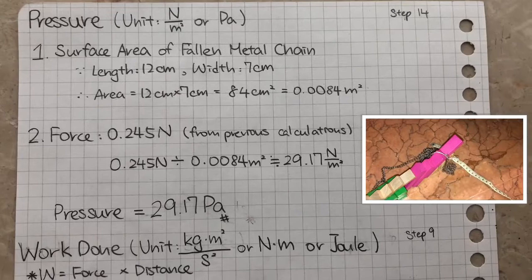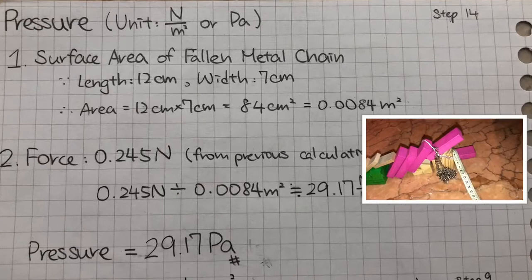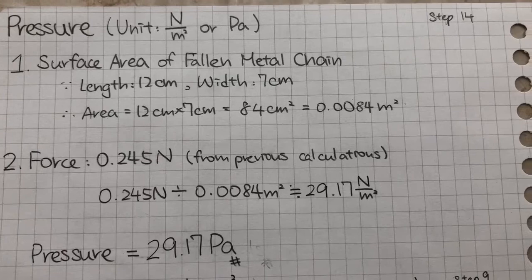I calculated the surface area of the chain spread on the floor which is 0.0084 square meters. The force I calculated previously is 0.245 newtons. Then I divided the force by the surface area which gives me a pressure of 29.17 pascals.